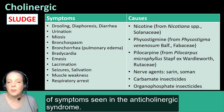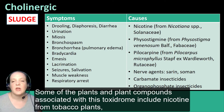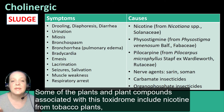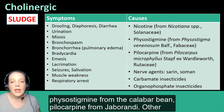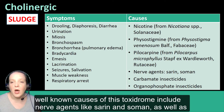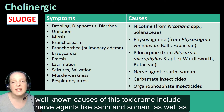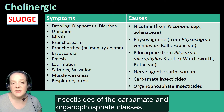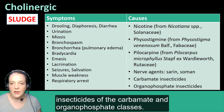Some of the plants and plant compounds associated with this toxidrome include nicotine from tobacco plants, physostigmine from the calabar bean, and pilocarpine from Jaborandi. Other well-known causes of this toxidrome include nerve agents like sarin and soman, as well as insecticides of the carbamate and organophosphate classes.